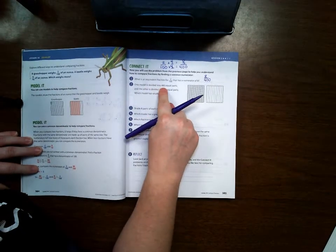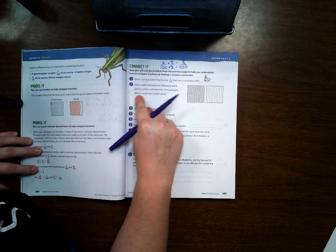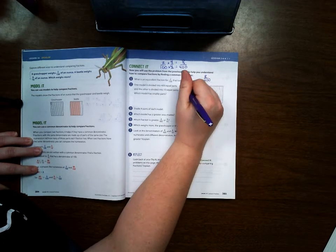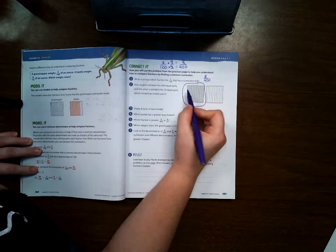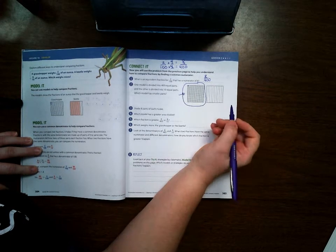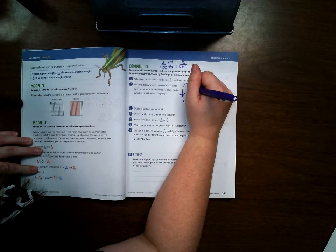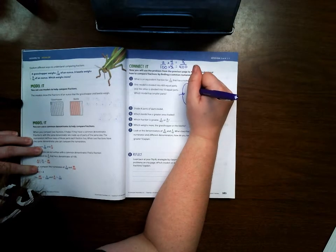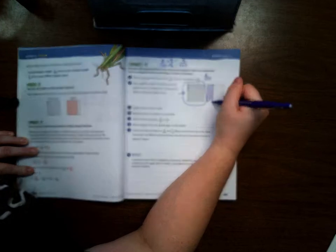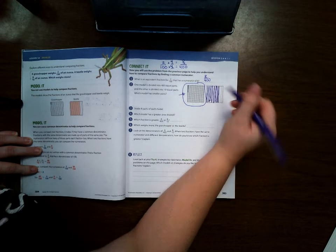One model is divided into 400 equal parts and the other is divided into 10 equal parts. Which model has smaller parts? Well obviously this one because see how teeny tiny these little squares are? So that model does. Now it says shade 8 parts of each model. 1, 2, 3, 4, 5, 6, 7, 8. And 1, 2, 3, 4, 5, 6, 7, 8. Okay there we go.